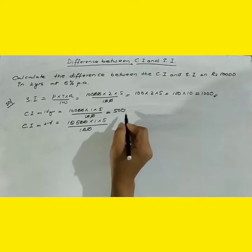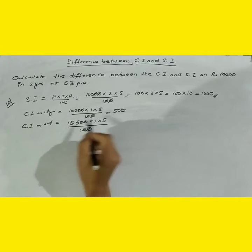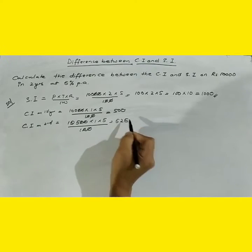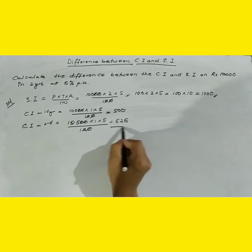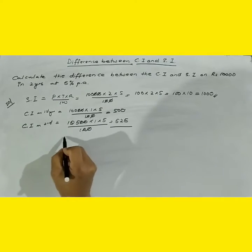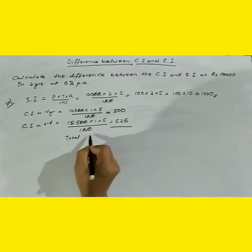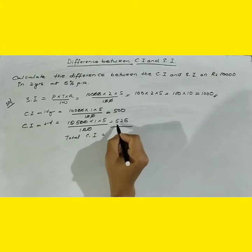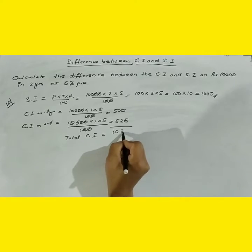So if you multiply this, you will get 525. So total compound interest, if you add these two, you will get 1025.